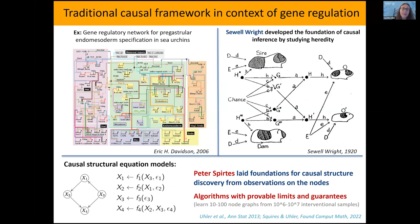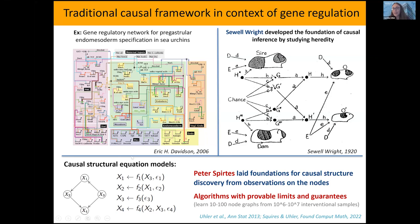This is distinct from what we saw with Granger causality this morning, which is a different form because we're not assuming time series information. With time series, the problem becomes much easier because you already know the direction in time — edges can only point forward. These fundamental limitations — if you just have data from a steady state and want to get at causality — mean we'll simply never have the data set sizes needed for 20,000 nodes, even with crazy growth in sample sizes.